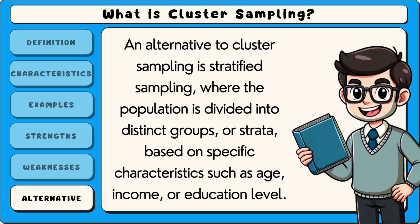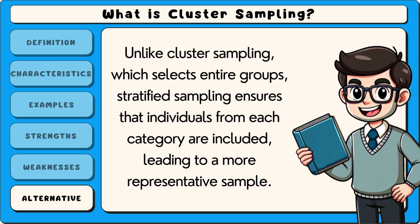An alternative to cluster sampling is stratified sampling, where the population is divided into distinct groups, or strata, based on specific characteristics such as age, income, or education level. Unlike cluster sampling, which selects entire groups, stratified sampling ensures that individuals from each category are included, leading to a more representative sample.